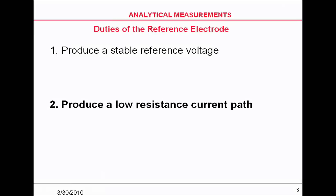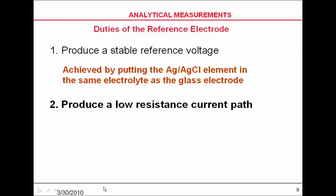What's the functions of the reference electrode? One is to produce a stable reference voltage, and the other is to produce a low resistance current path. We produce a stable reference voltage by using a silver-silver chloride element in the same electrolyte as what's in the glass electrode. We produce a low resistance current path by keeping your liquid junction clean.